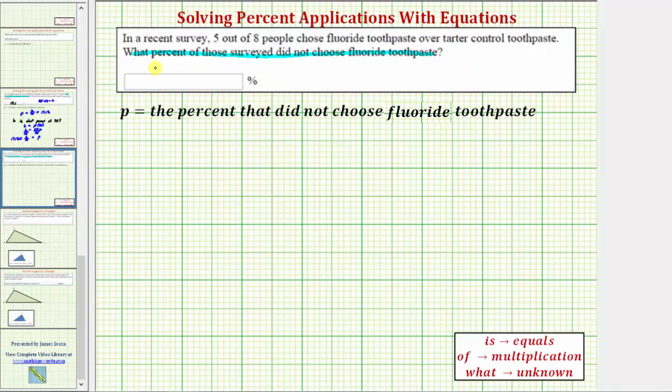To answer our question, we need to determine what percent is three out of eight, and we'll show how to do this two ways. If we define p as the percent that did not choose fluoride toothpaste, we can first define p as a fraction, then convert the fraction to a decimal, then the decimal to a percentage.